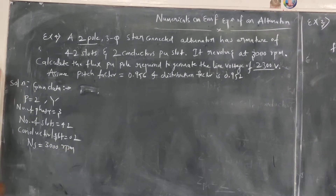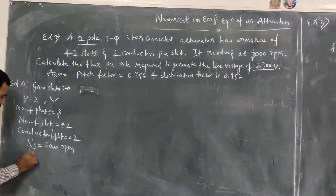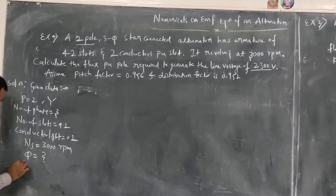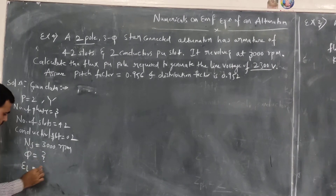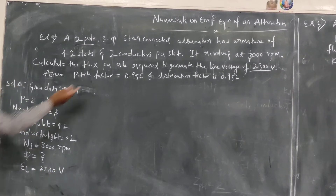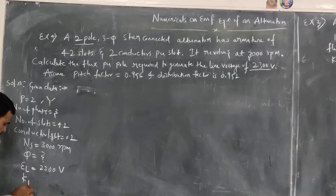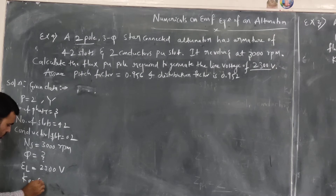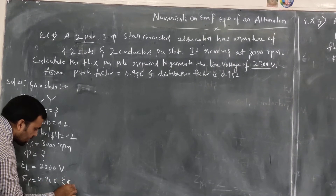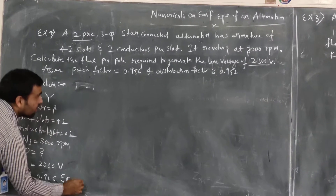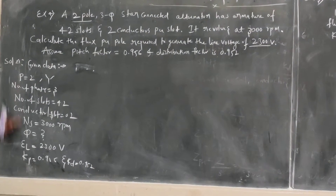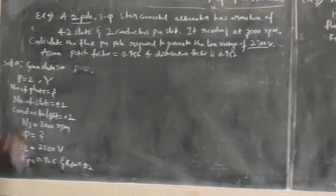We need to calculate the flux per pole, that is φ. The line voltage is given: EL = 2300 volts. Assume pitch factor Kp = 0.956 and distribution factor Kd = 0.952. So I have written all the given data.